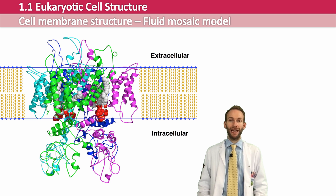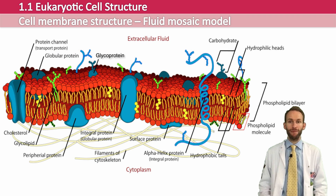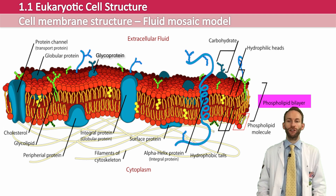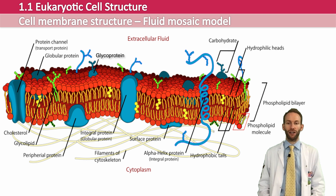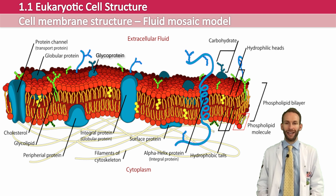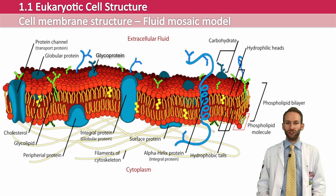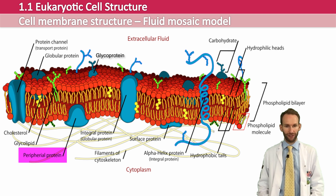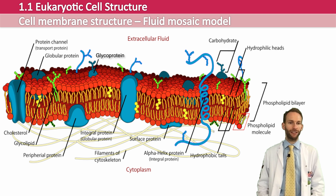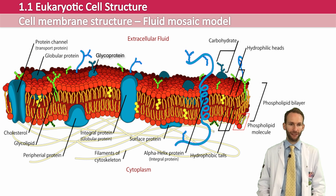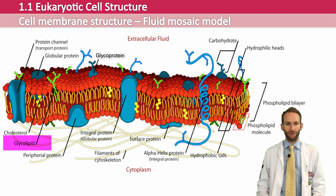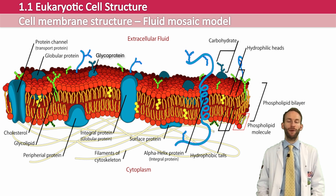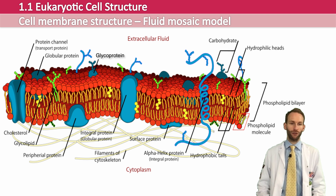Here is a diagram of the fluid mosaic model. You need to become very familiar with this diagram. It shows the phospholipid bilayer, with the hydrophobic tails pointing in towards each other away from the fluid and cytoplasm, and the heads attracted to the water-based fluid and cytoplasm. We've got various proteins: peripheral proteins, integral proteins, and a protein channel which allows specific molecules to pass through it. We've also got a glycolipid and glycoproteins — molecules with carbohydrates attached — which are used for things like cell recognition.